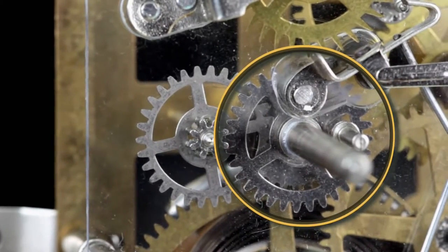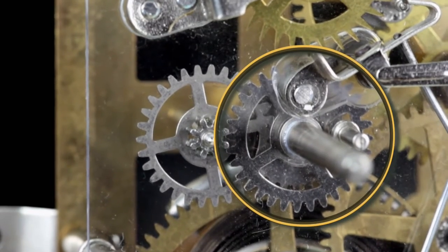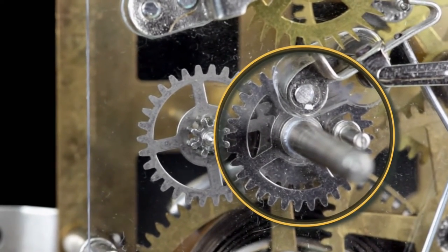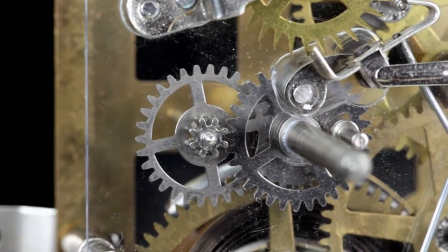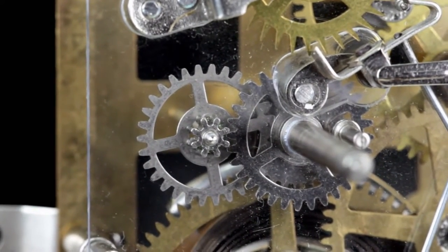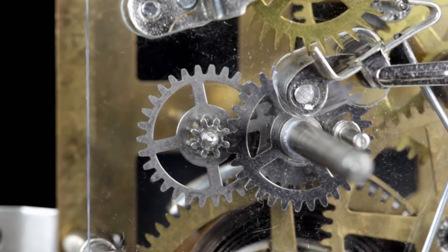The wheel carrying the center arbor that rotates once per hour is called the center wheel, regardless of its position in the wheel train. It could be the second or the third wheel in the train or, as in the case of our movement, completely separate from the actual wheel train.